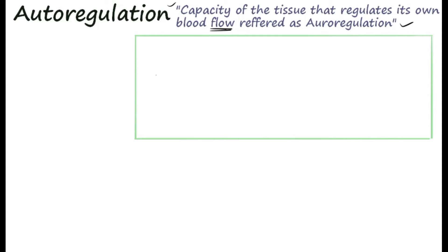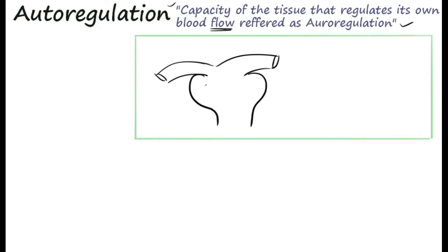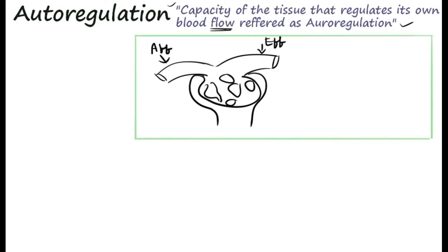Let us see the examples of autoregulation. The kidney is one of the important organs that maintains its autoregulatory process. It has an afferent arteriole, efferent arteriole, and Bowman's capsule. The afferent arteriole maintains constant flow despite wide blood pressure fluctuations, which may range from 90 to 220 millimeters of mercury. Despite this wide fluctuation, it maintains constant flow because of autoregulation of its blood vessels.